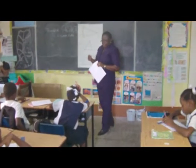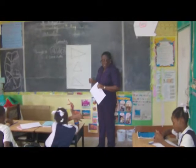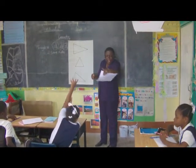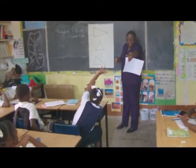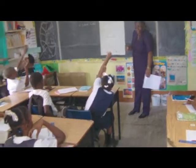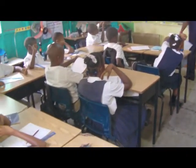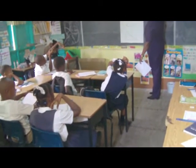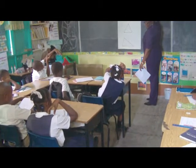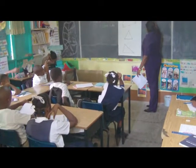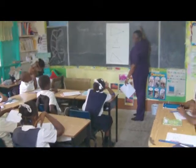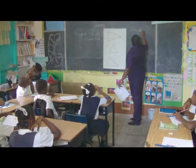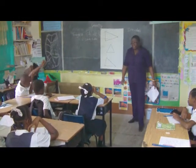If they have two sides equal, we have a name that we call them. Anybody ever hear about them yet? Ever hear a word — what's the name? Let me hear you. Isosceles. Isosceles. Very well. That's the name I'm looking for. Isosceles. Spell it for me. Anybody can spell it for me. I-S-O-S-C-E-L-E-S. Good. Isosceles triangle.